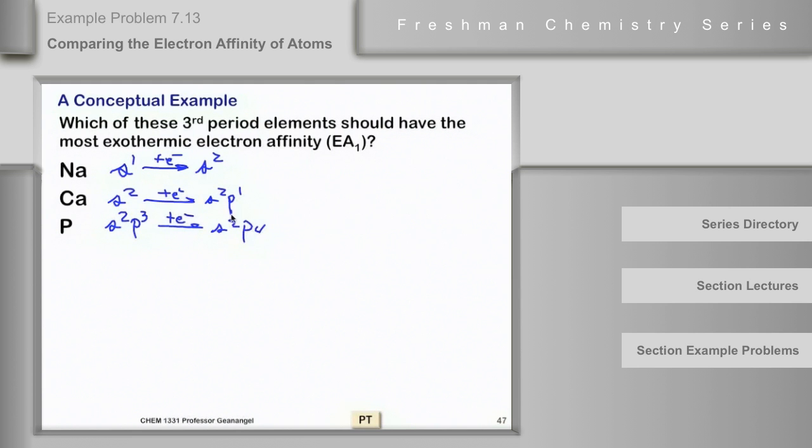So as we look at these, S2 is more stable than S1, so this electron affinity is going to be exothermic. And S2 is more stable than S2P1, so this is going to be endothermic.